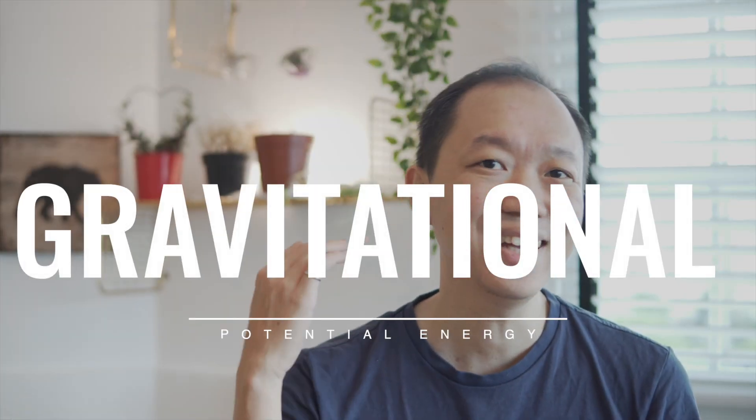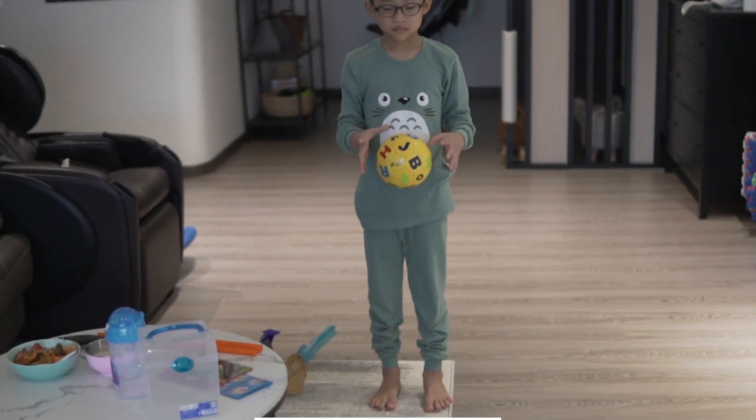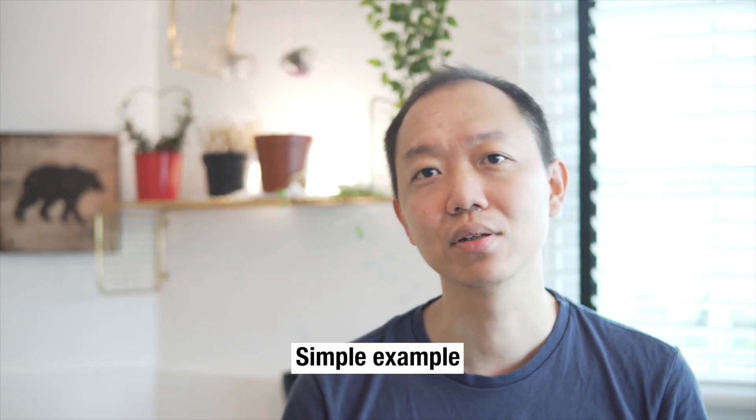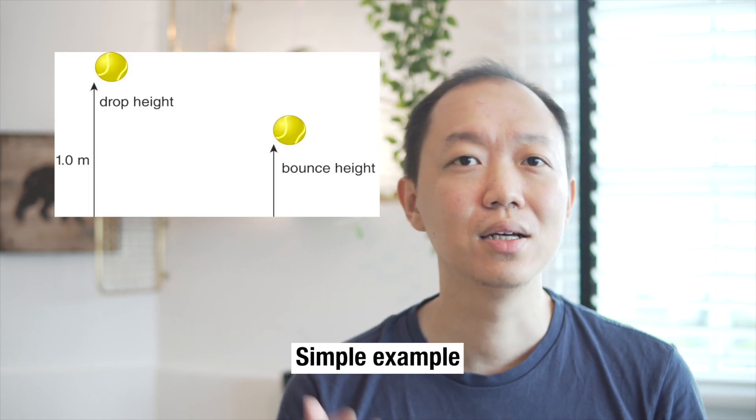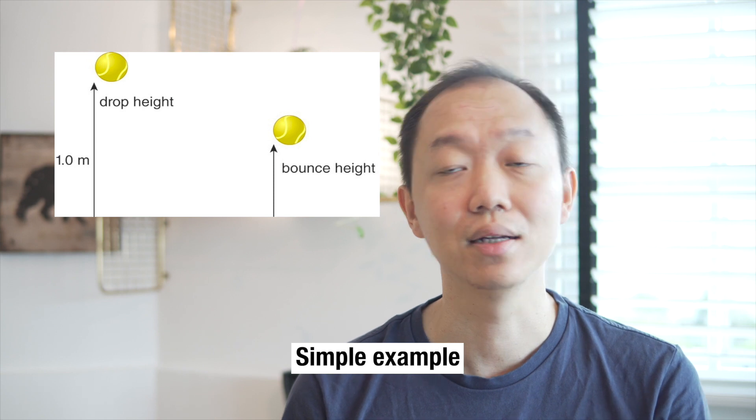Gravitational potential energy. The higher an object is, the more GPE it possesses. The lower, the less GPE. A simple example is when an object falls to the ground because of Earth's gravitational pull, the one that is higher will rebound higher than the one which is let go at a lower height.